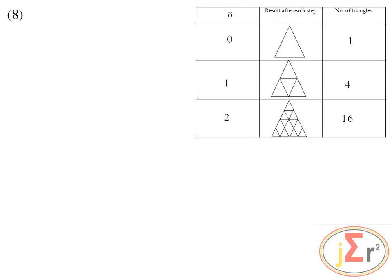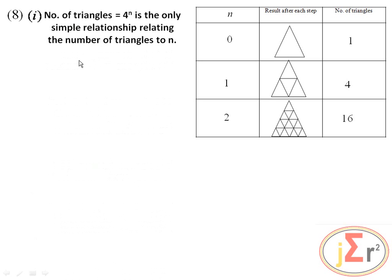We need to calculate the number of triangles formed when n equals 3. The number of triangles is equal to 4 to the power of n. Notice that 0 maps to 1, 1 maps to 4, and 2 maps to 16. If we raise 4 to the power of 1 we get 4; 4 to the power of 2 gives 16; and any number raised to the power of 0 is 1. So this is the relationship, no doubt.